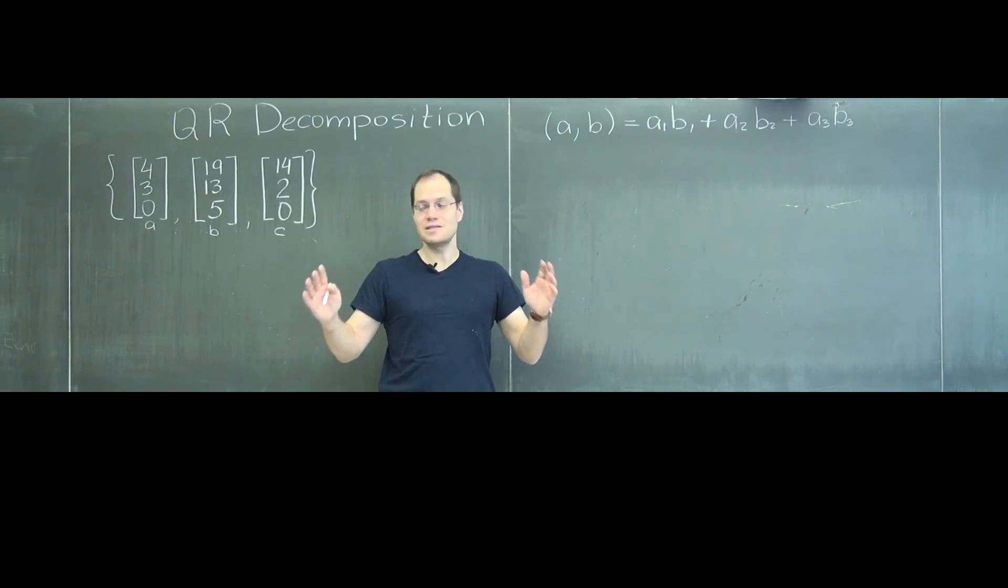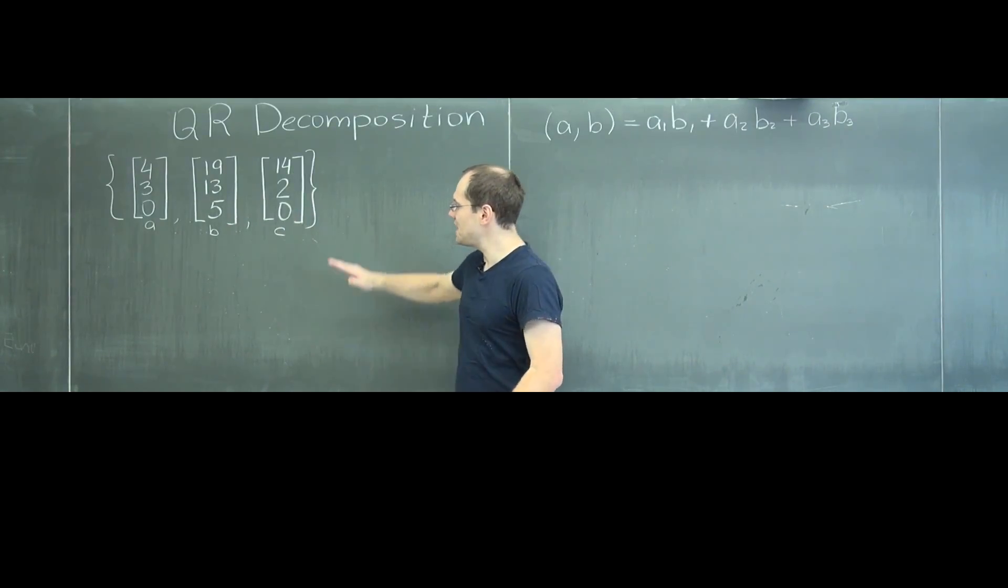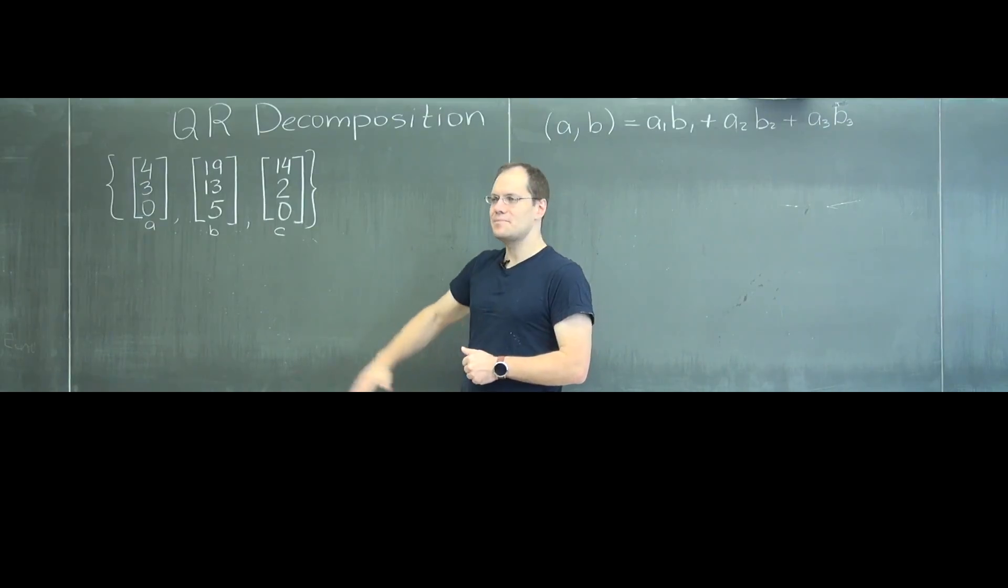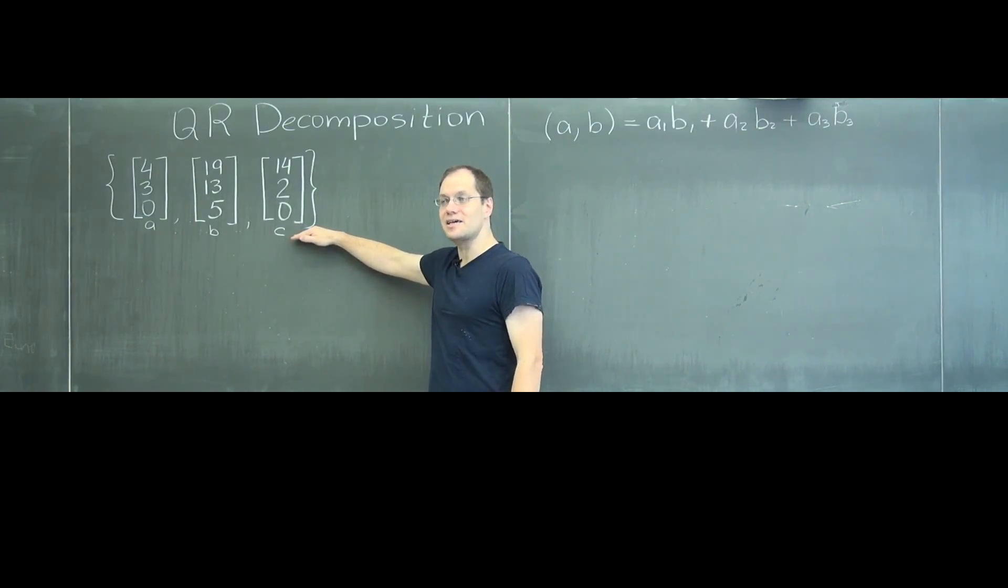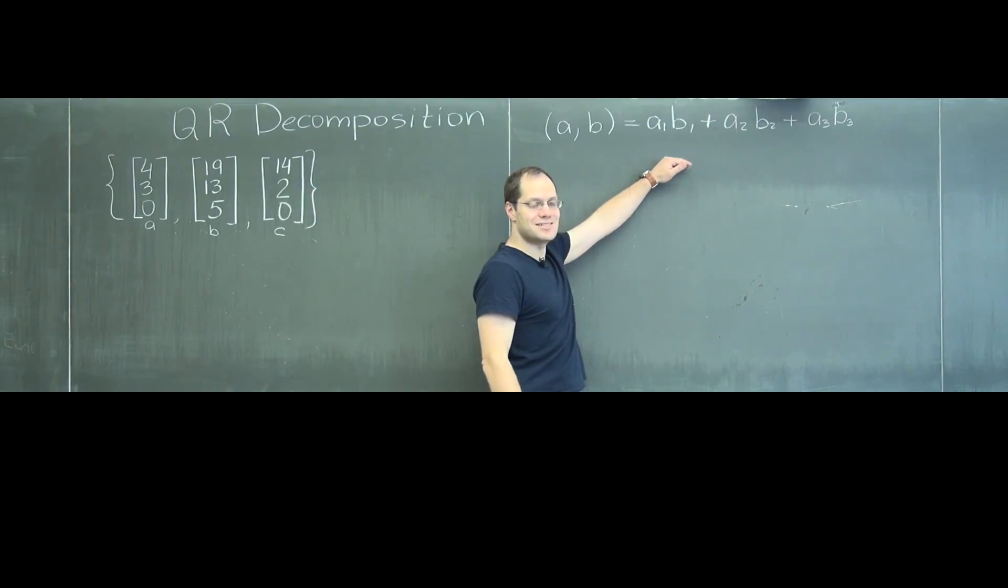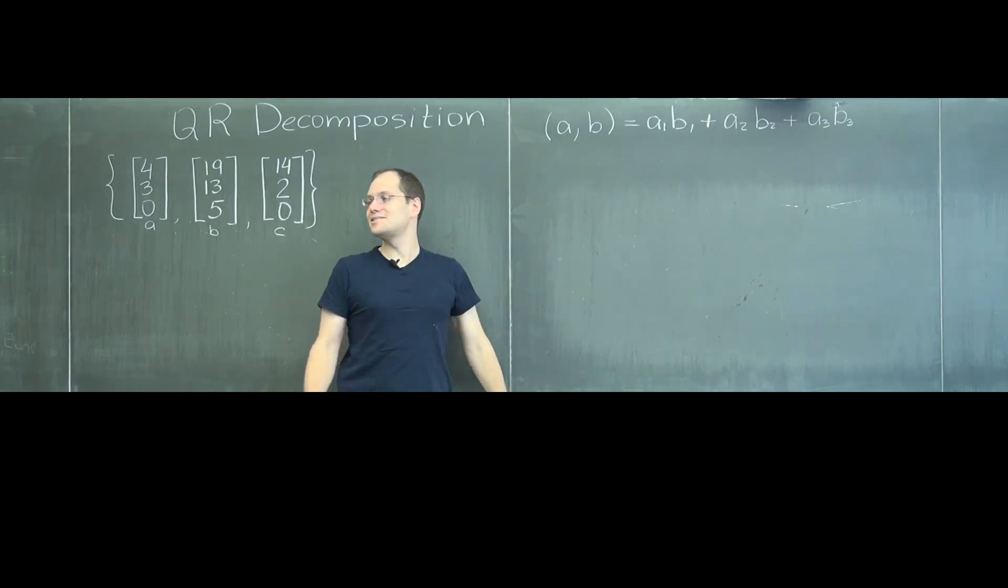That's something to keep in mind as our target, but our task at hand is to orthogonalize and then go a step further and orthonormalize, which means make them unit length, these three vectors. And the immediate question if somebody says orthogonalize is that's right, with respect to what inner product?